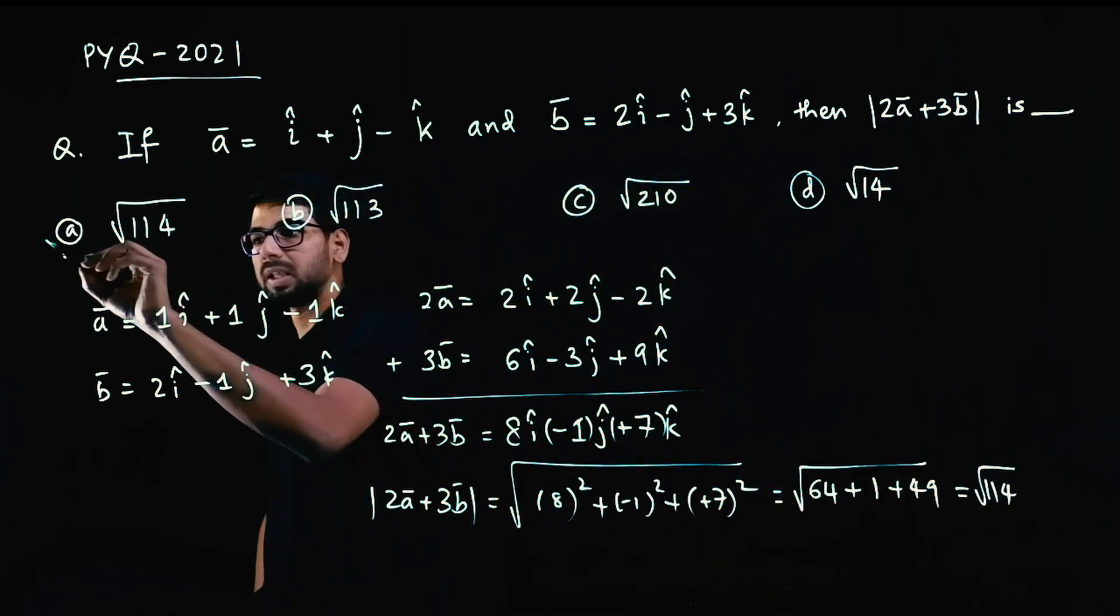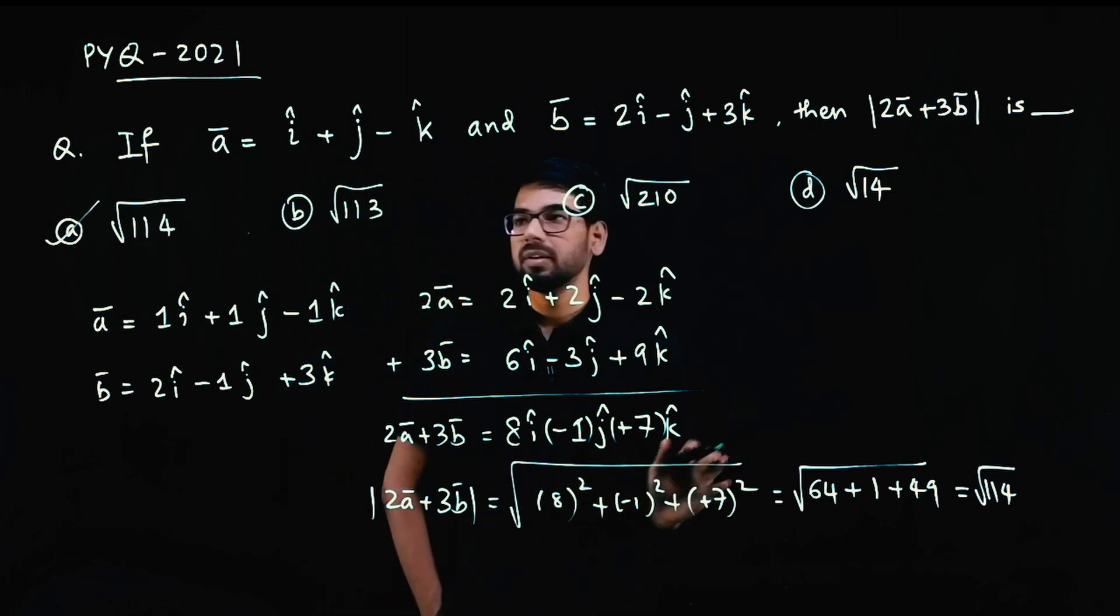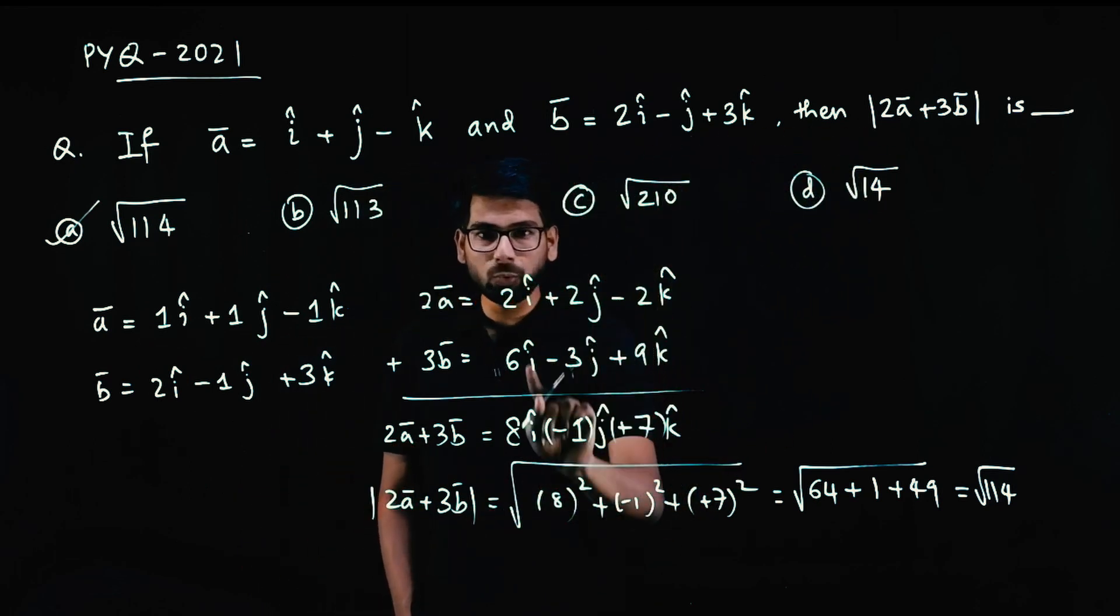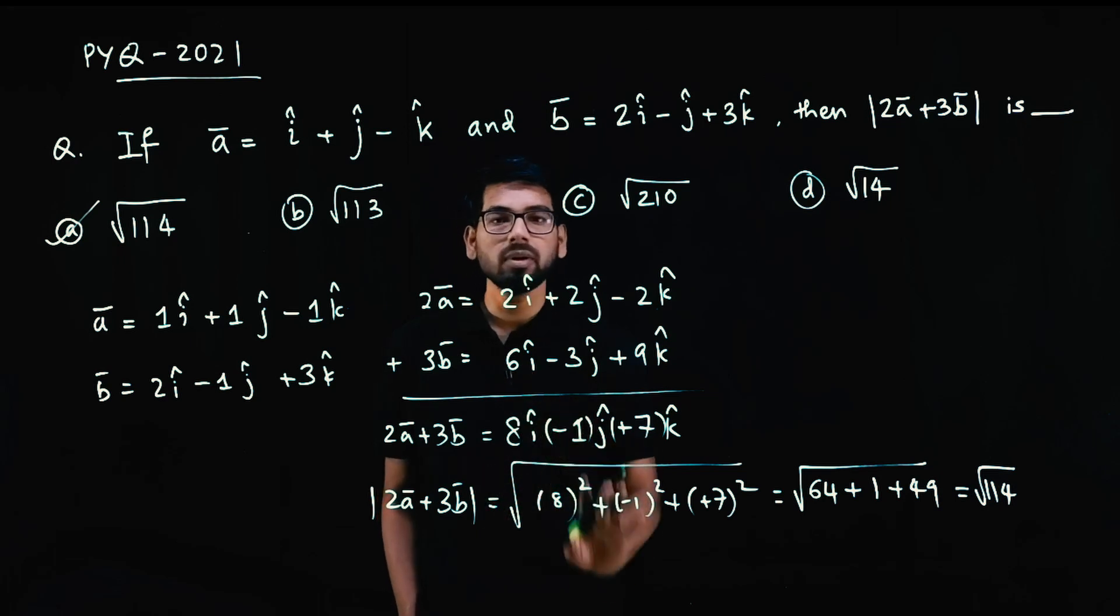So root 114, you have the option. Option A. So simple. Very simple. Multiply number to vector, add two vectors, take magnitude of vector.